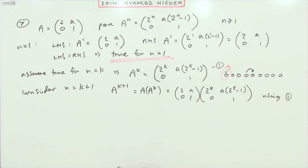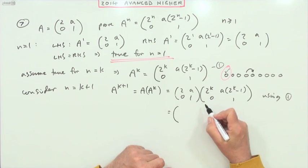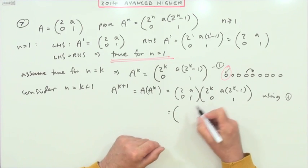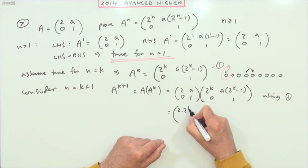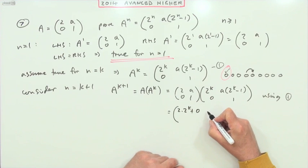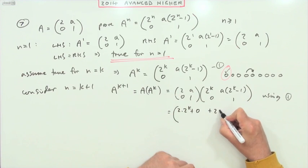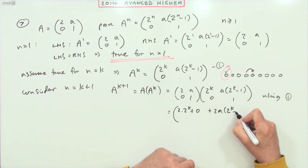Calling that into play. I'll do that matrix multiplication. So I've got 2 times that, and I could put that in straight away as 2 to the power k plus 1, but I'll not. I'll say 2 times 2 to the k plus 0, just sort of build the surprise at the end. Plus 2 times that, 2a times 2 to the k minus